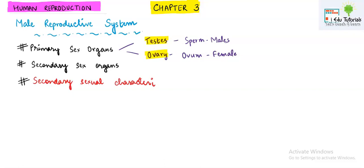Secondary sex organs are the ones which do not directly help in sexual reproduction but whose presence is very important. For example, the epididymis is a structure found in the male reproductive system, and the fallopian tube is a structure found in the human female reproductive system. These structures do not directly help in the production of gametes, but their presence is very important — that is why they are known as secondary sex organs.